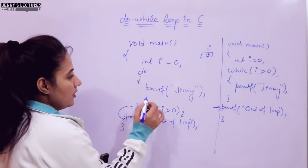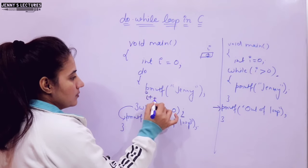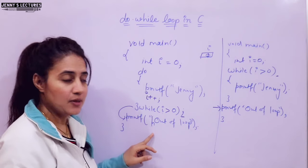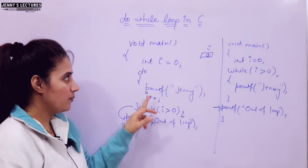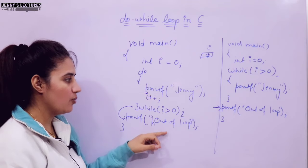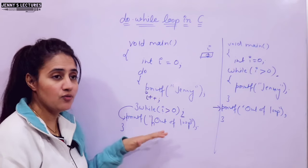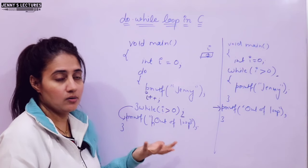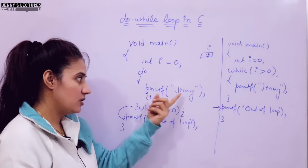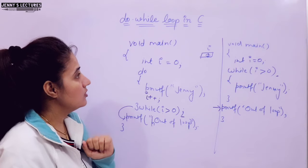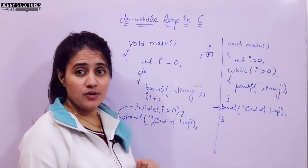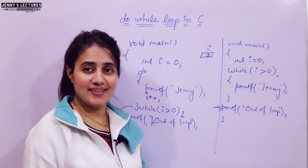Now, if I add i++ inside the do-while loop with i initialized to 0 and the condition while i greater than 0, what output will you get? Tell me in the comment box: whether it would be an infinite loop or a finite loop, and how many times 'jenny' would be printed. That is your assignment. That's it for this video. I will see you in the next video. Bye-bye, take care.